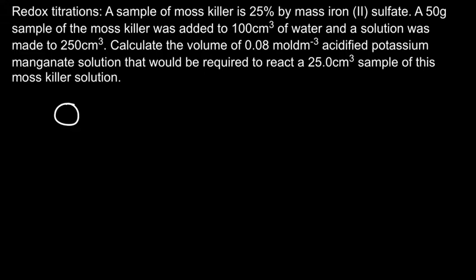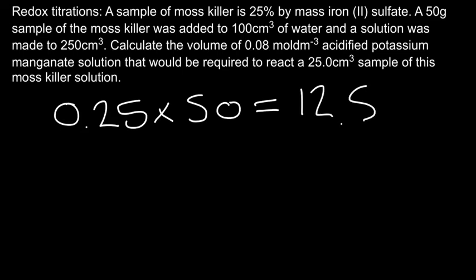It's really easy though. So all I need to do is 0.25 times 50, and that's going to tell me what mass I have of the 50, which is the iron(II) sulfate I'm interested in. And that's quite easily 12.5 grams. Now that 12.5 grams is of FeSO₄.